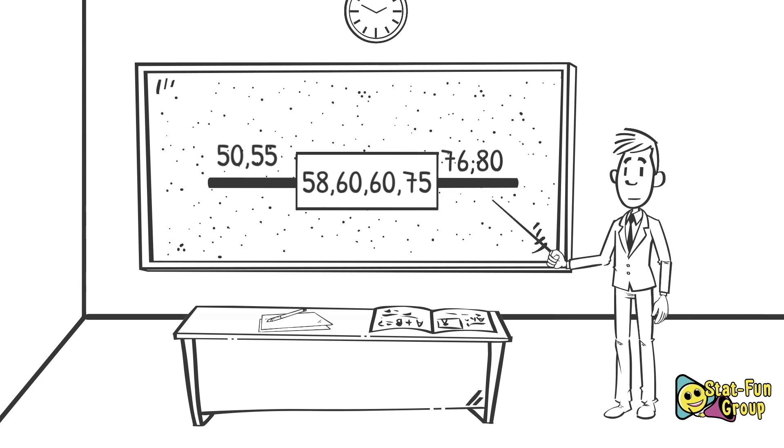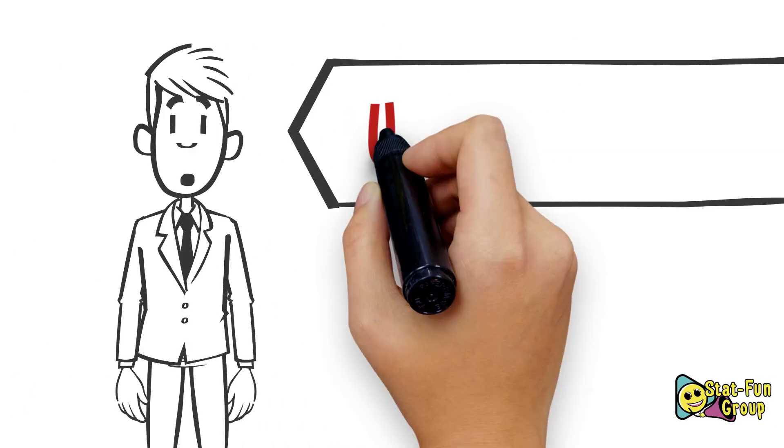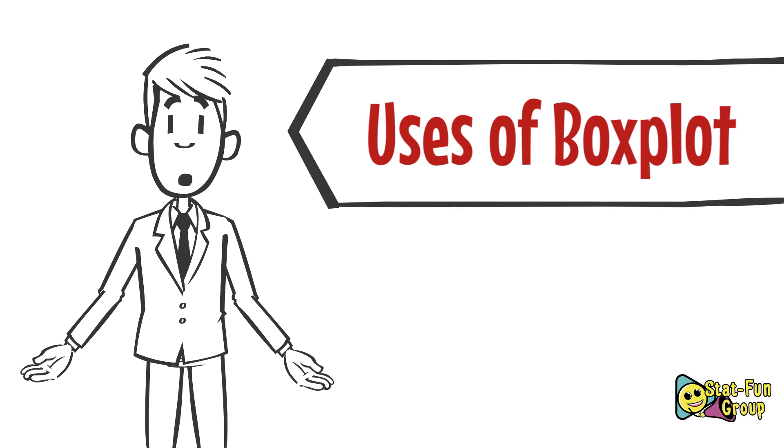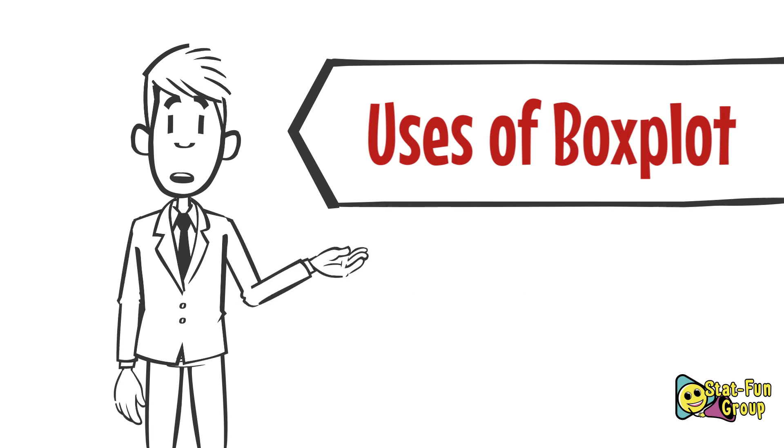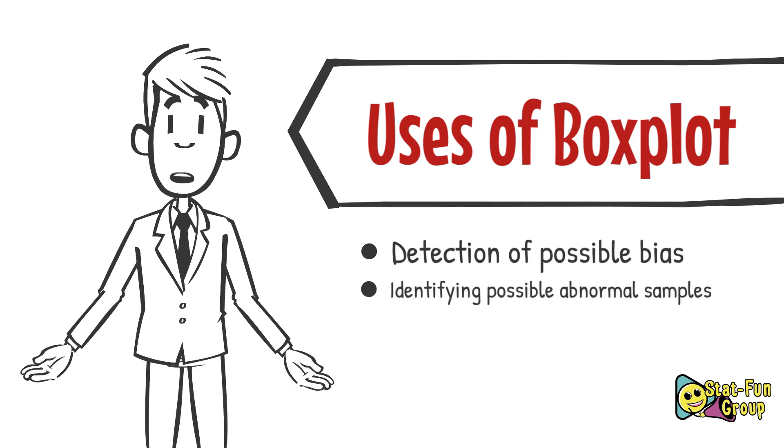Okay, now the structure of boxplot is clear to you, right? Let's discuss its uses. There are mainly three important visual uses of boxplot: detection of possible bias, identifying possible abnormal samples, and group comparisons. I'm going to illustrate various uses of boxplot by certain case studies.